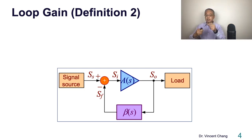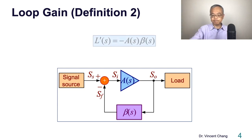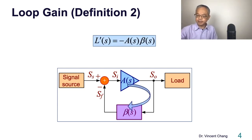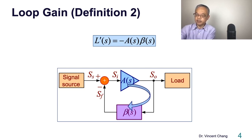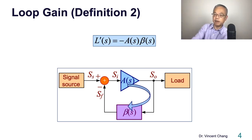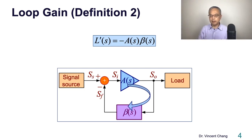So the loop gain is going to be defined as... my laser pointer is not working well, the receiver is not working well. Let me quickly pause — I'll be right back. All right, I'm back.